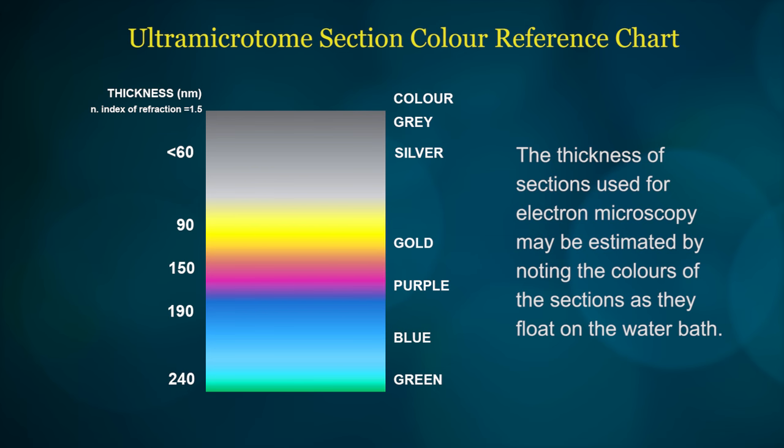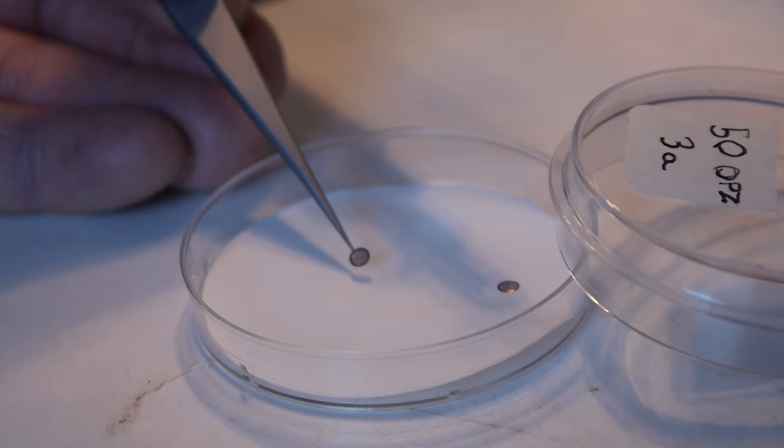Compression in the sections is removed by using chloroform vapor. Note the color changes as the sections stretch out. The chart shows the thickness of the different colored sections. Only the silver to gold colored sections are suitable for electron microscopy. They are 70 to 90 nanometers thick.